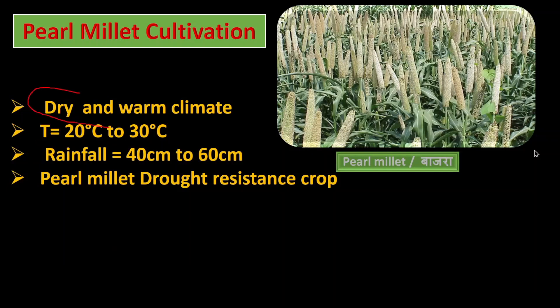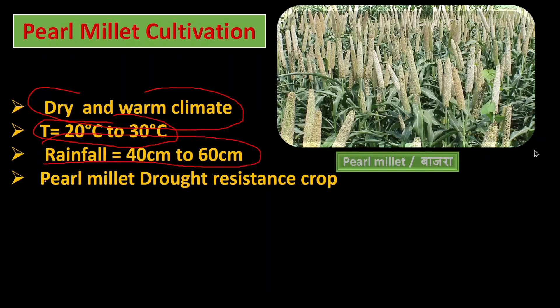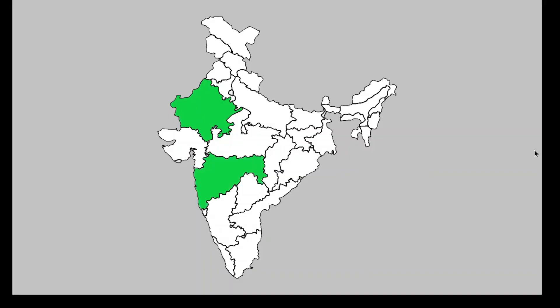Pearlmillet (Bajra) requires warm climate. Temperature range is between 20 to 30 degree Celsius. Annual rainfall required is 40 centimeter to 60 centimeter. Pearlmillet is a drought-resistant and tolerant crop. The major pearlmillet cultivating states are Rajasthan, Maharashtra, Haryana, Gujarat, and Uttar Pradesh.